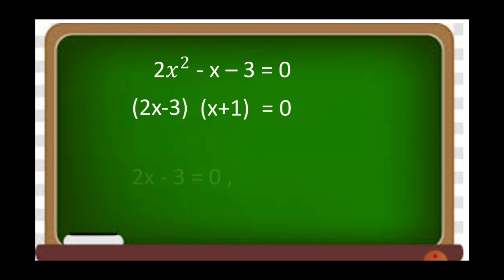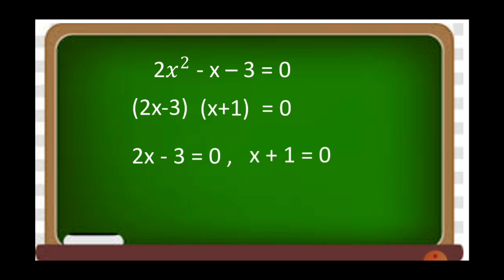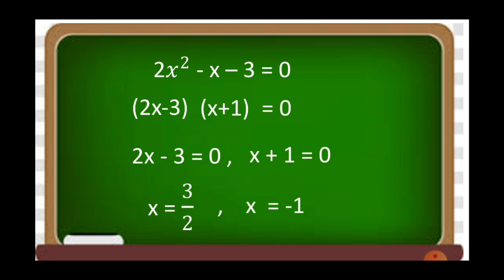Equating both factors to 0: 2x minus 3 is equal to 0, and x plus 1 is equal to 0. Getting the value of x, we have x is equal to 3/2, and x is equal to negative 1.